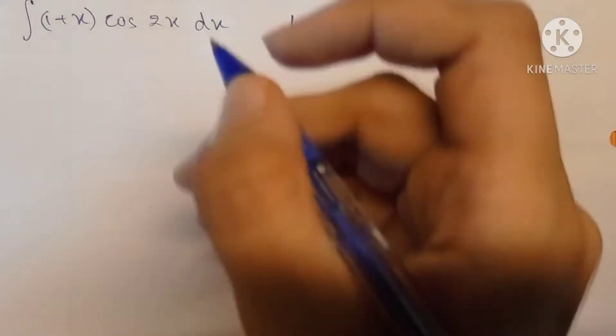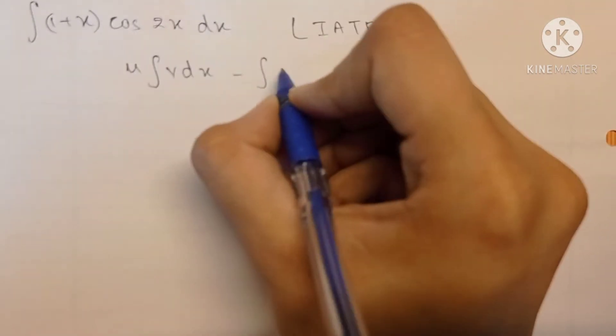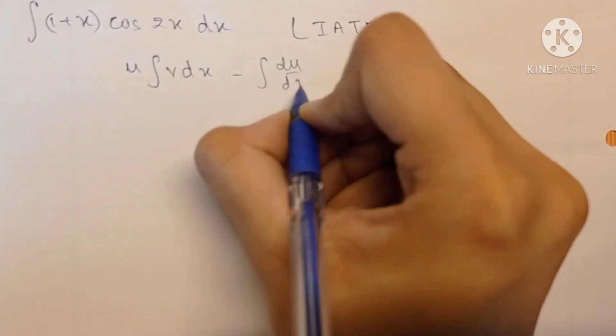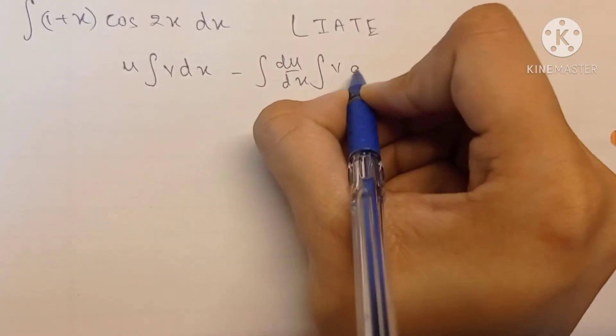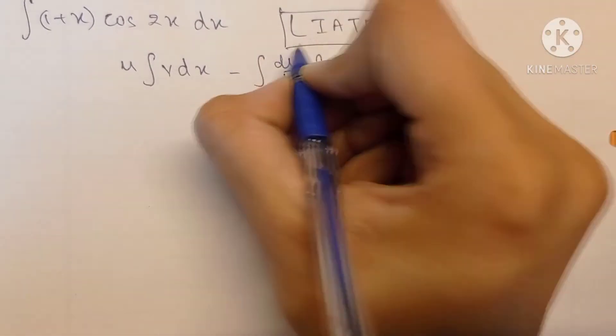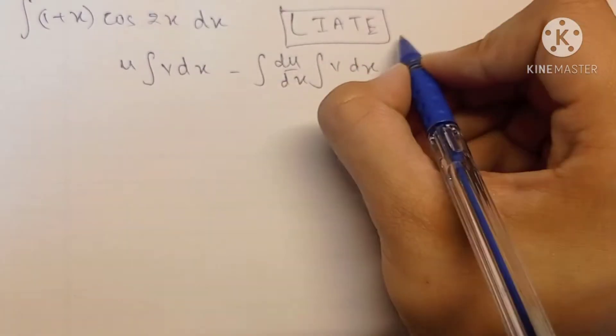We will use the by-parts rule. The by-parts rule is u times the integration of v dx minus integration of differentiation of u times integration of v dx. LIATE gives us the order of preference for the u term.